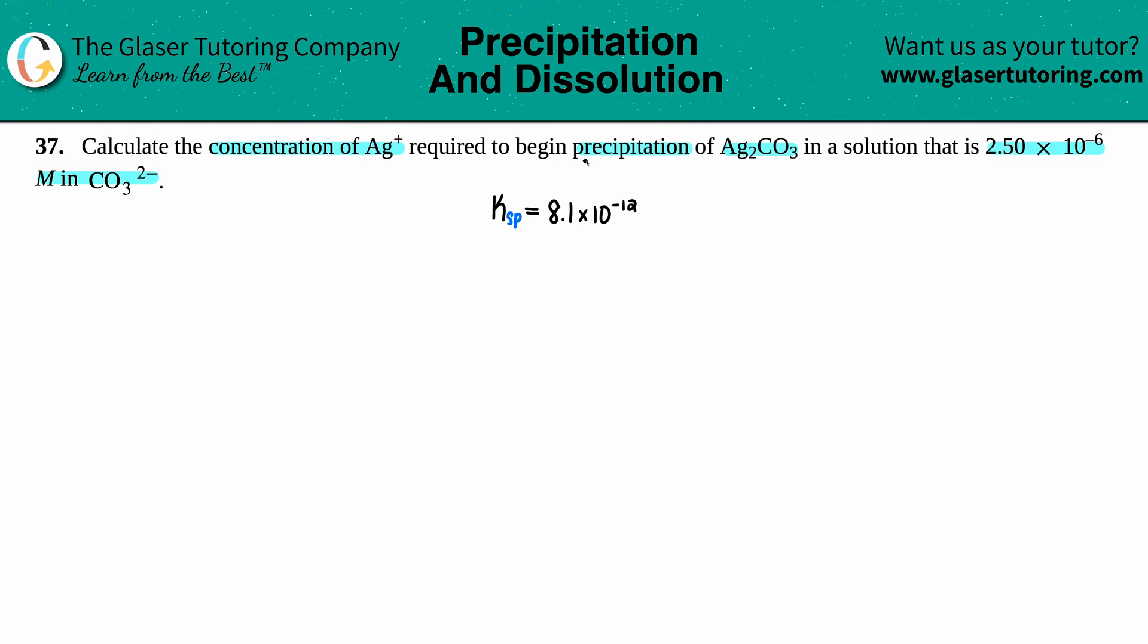We're dealing with solubility products, so I went to the back of the textbook to find out what the KSP is of silver carbonate, which is 8.1×10⁻¹². In order to use this number, we have to be at equilibrium.